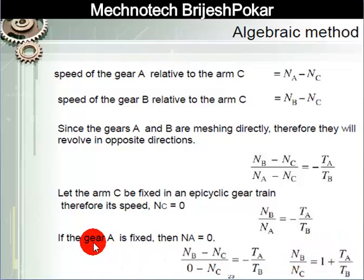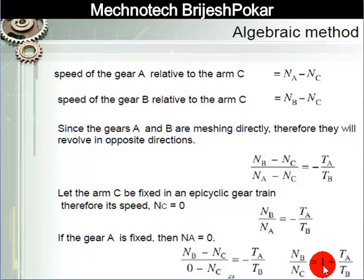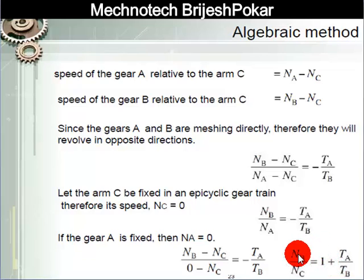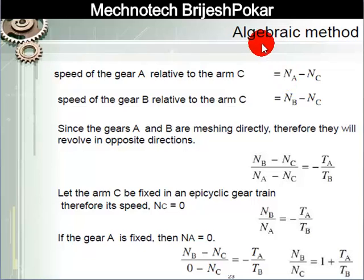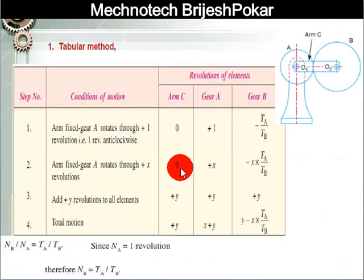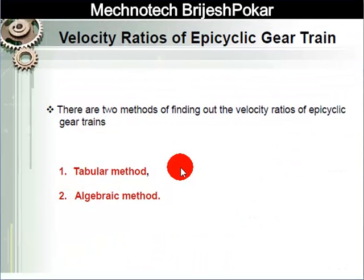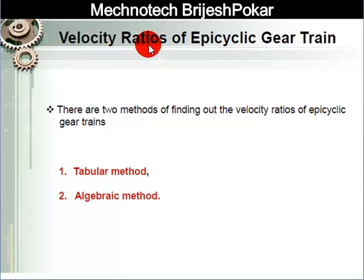So the final equation when gear A is fixed is: Nb/Nc = 1 + Ta/Tb. By these two methods — tabular and algebraic — we can find the velocity ratio of an epicyclic gear train.